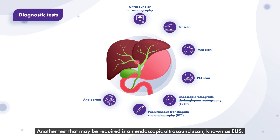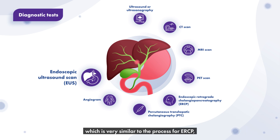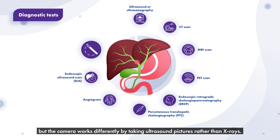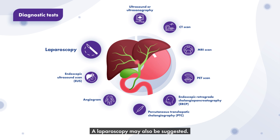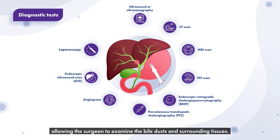Another test that may be required is an endoscopic ultrasound scan known as EUS, which is very similar to the process for ERCP, but the camera works differently by taking ultrasound pictures rather than X-rays. A laparoscopy may also be suggested. This involves an incision in the abdomen through which a tube with a camera attached is inserted, allowing the surgeon to examine the bile ducts and surrounding tissues.